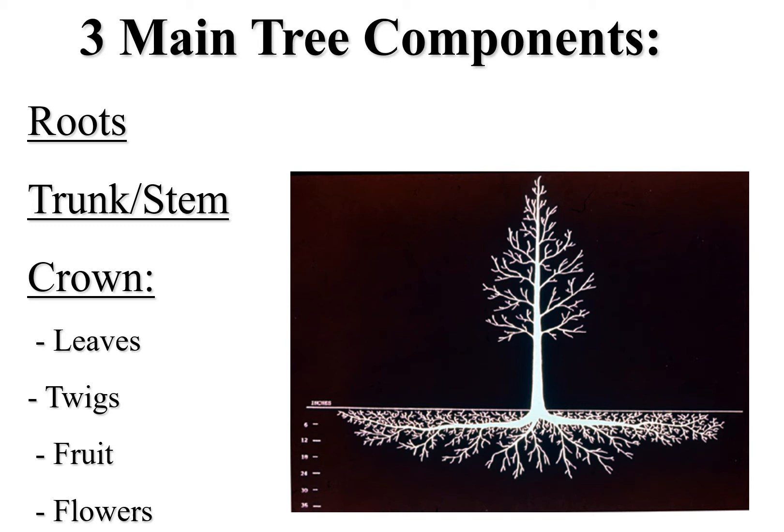This presentation will cover the following tree components: roots, trunk and stem, crown and leaves, and fruits and flowers. Please note on this graphic the root system of this tree. It extends quite far horizontally, but depth into the soil is only approximately 24 inches.